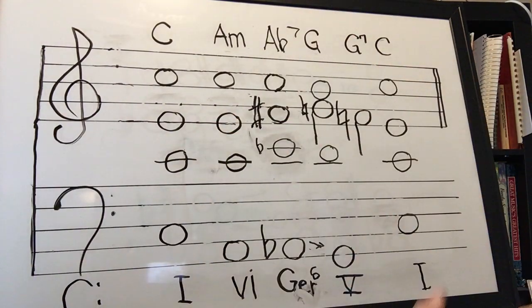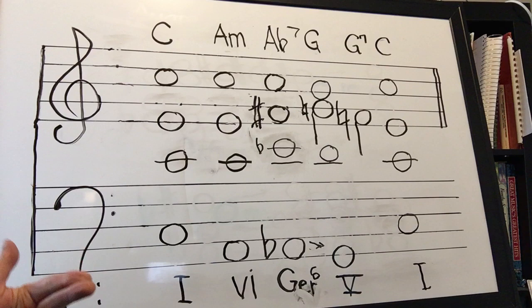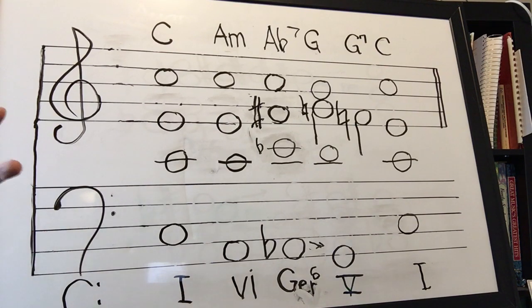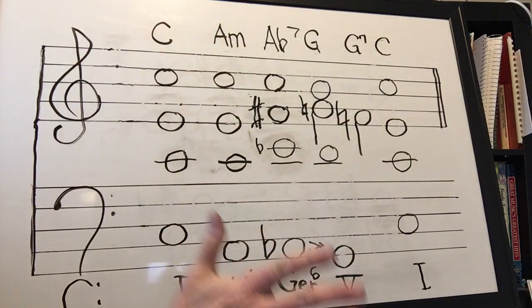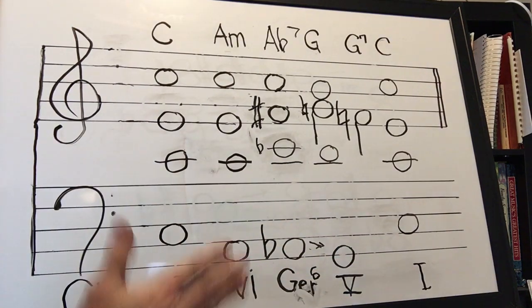We add our doh every time, and depending on whether we add another doh, or if we're in three parts there's nothing left to add, whether we add doh and ray, or if we add doh and a lowered third may, that's how we distinguish between the three different types.